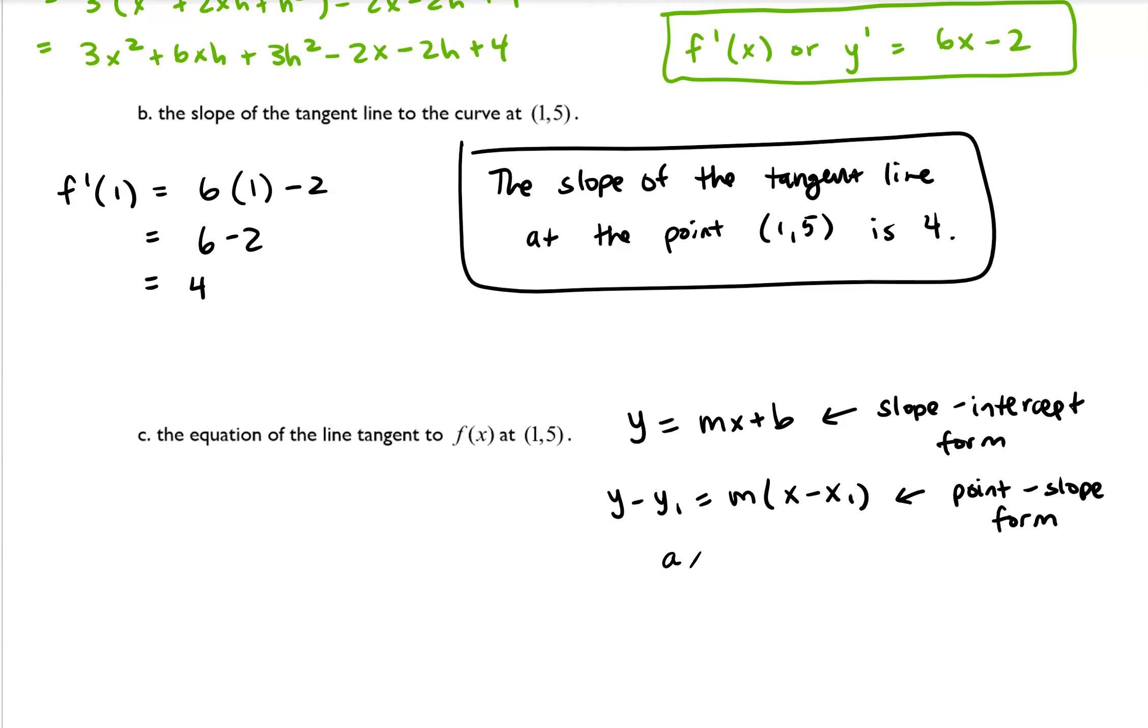You might have to do some refreshers, but those are the two forms that we most commonly deal with for linear functions. There's also the one called standard form, which is ax plus by equals c. So that is standard form. But we are going to work with the point slope form.